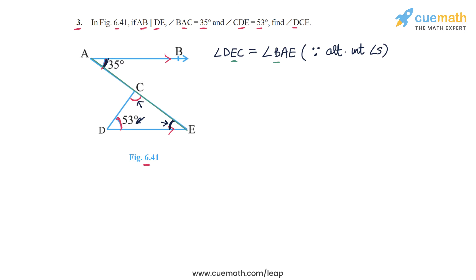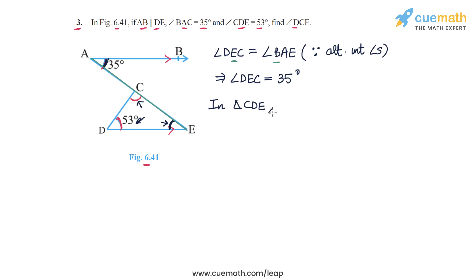So the measure of angle DEC is the same as angle BAE, which is 35 degrees. Now in triangle CDE, we apply the angle sum property — we sum the three angles and equate the sum to 180 degrees.